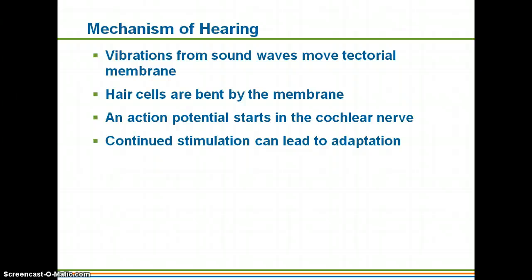So how do we hear? Vibrations from sound waves travel into your ear, through the auditory canal, through your middle ear, and into the inner ear by the stapes vibrating on the oval window. Those sound waves move the tectorial membrane and bend the hair cells, which triggers an action potential in the cochlear nerve. Continued stimulation can lead to adaptation — that's why if you're in a classroom with a loud air conditioner, your brain automatically adjusts for it and you almost don't realize it's there, until attention is drawn to it.